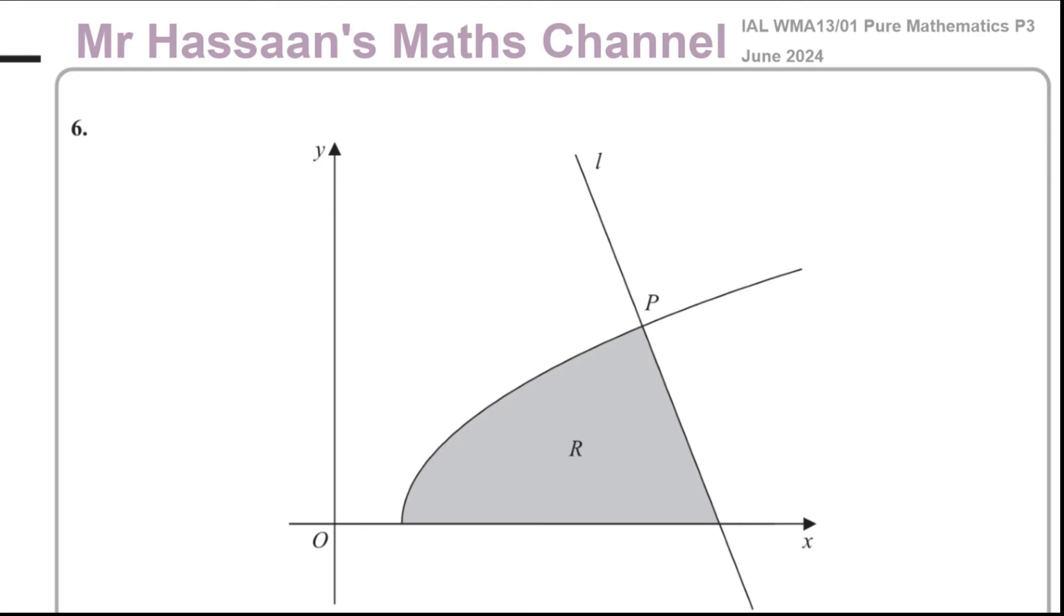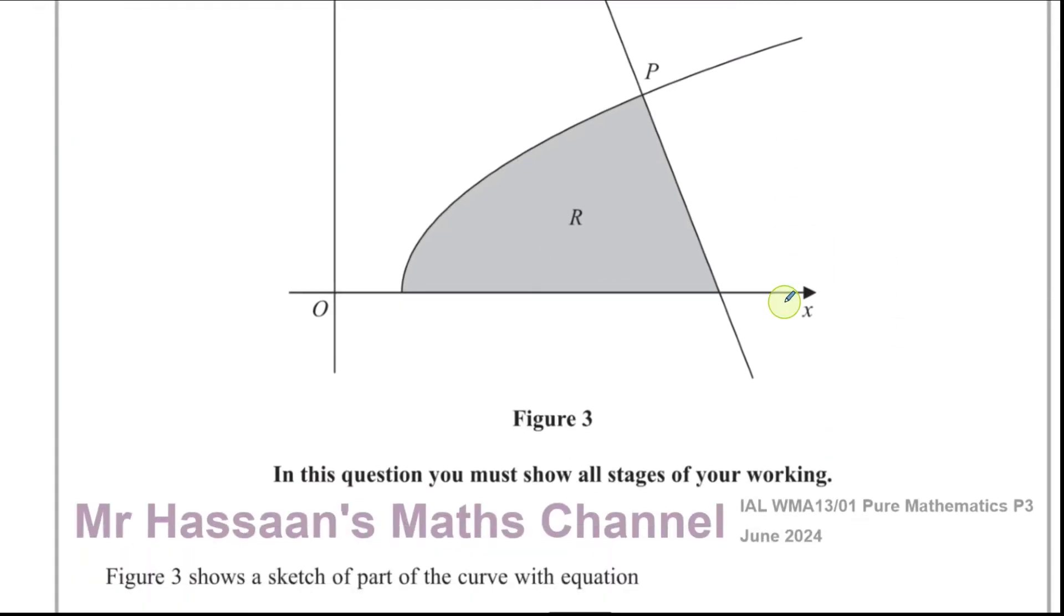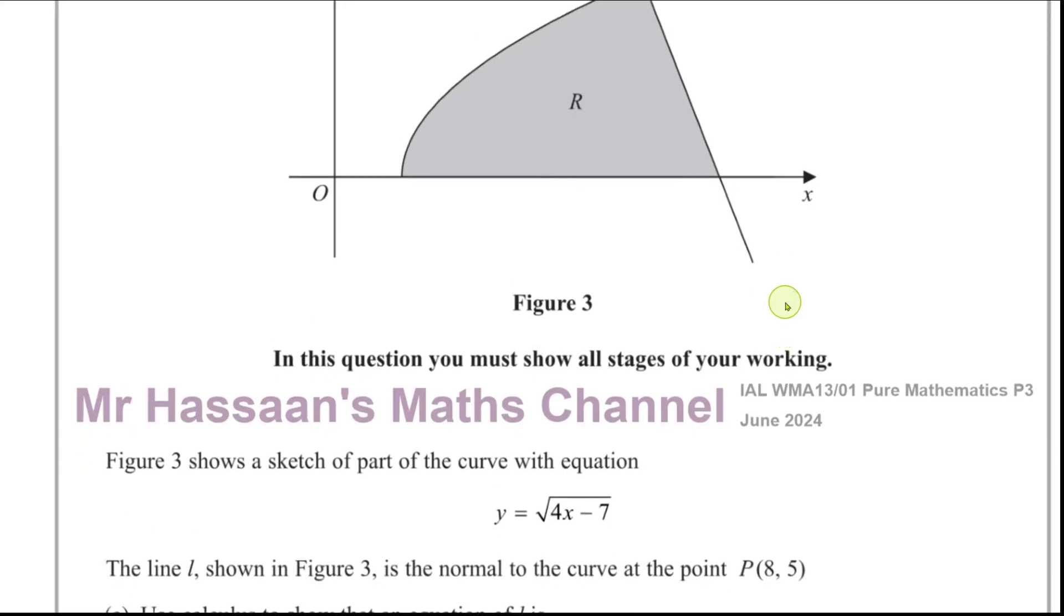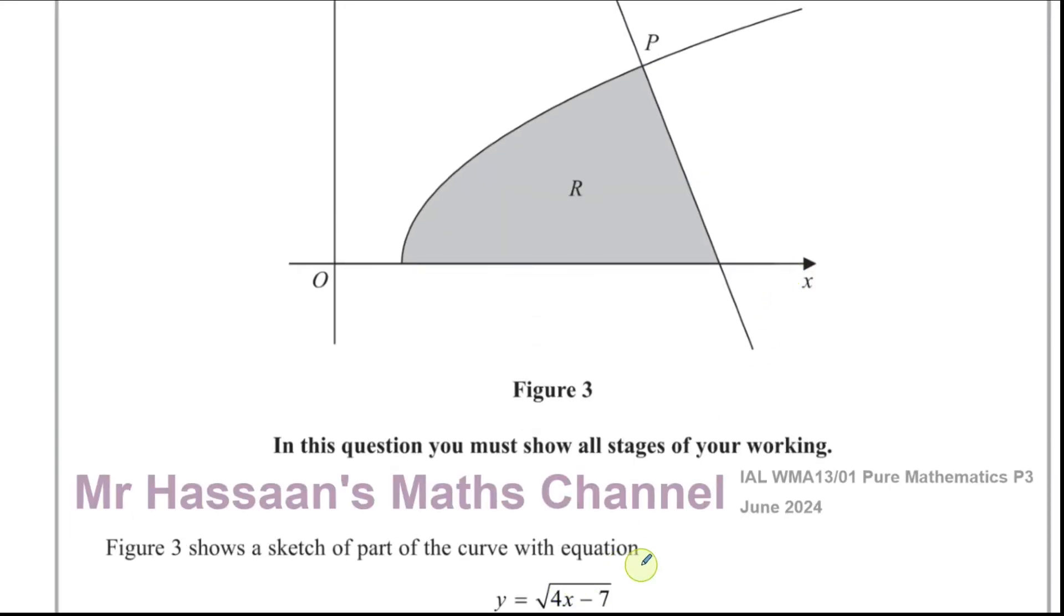Okay, welcome back. This is Mr. Hassan's Maths Channel. I'm now answering question number six from the June 2024 International A-Level Edexcel Pure Mathematics P3 paper. Here we have this question which tells us about a sketch of part of the curve with the equation y equals the square root of 4x minus 7.